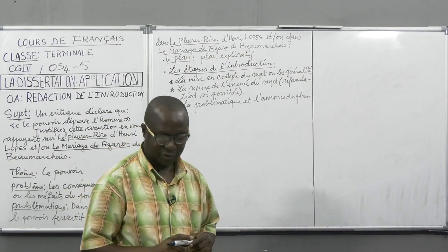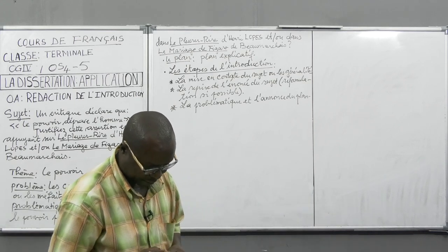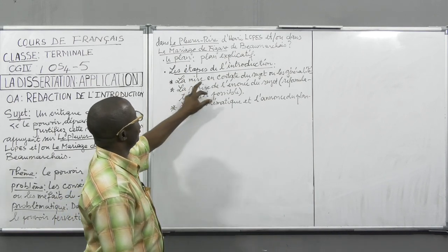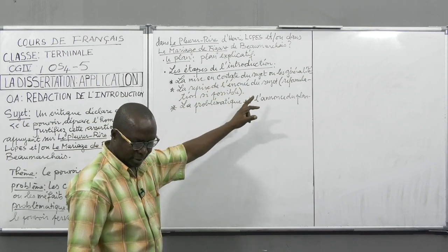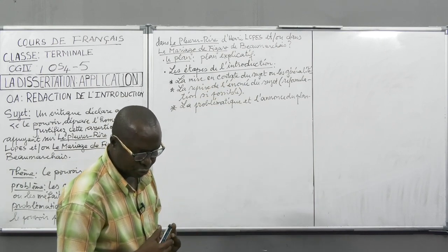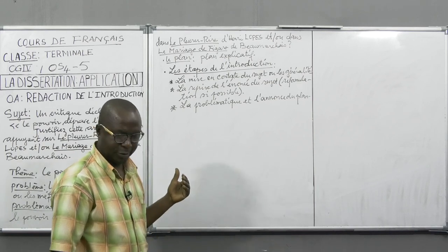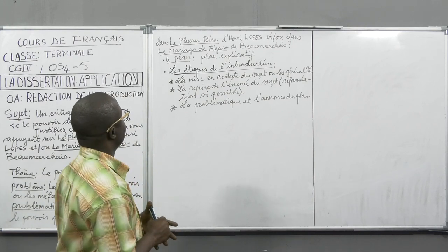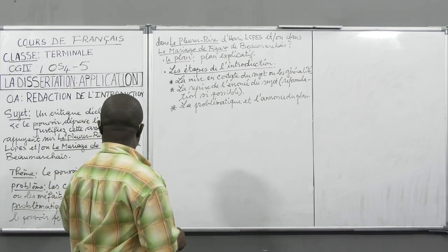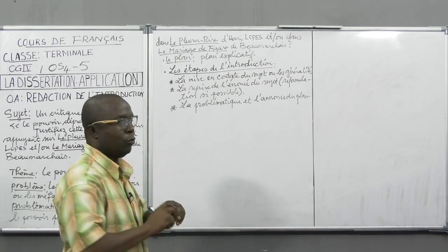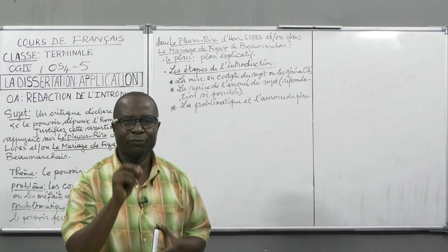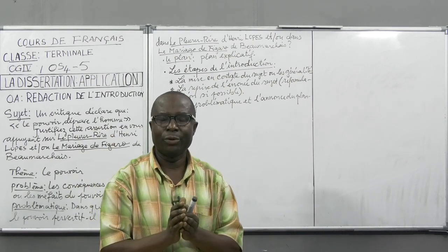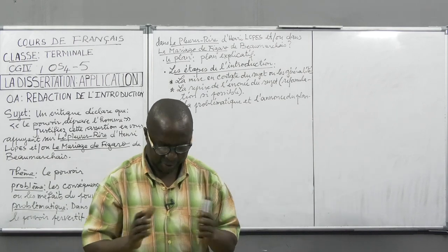En quoi consiste chacune des étapes ? La première étape, la mise en contexte du sujet, consiste à présenter le sujet en une phrase en le rapprochant du thème. Ici, évidemment, le thème c'est le pouvoir. Donc ce que vous devrez faire, c'est parler de façon générale du pouvoir. Ça, c'est la première étape.